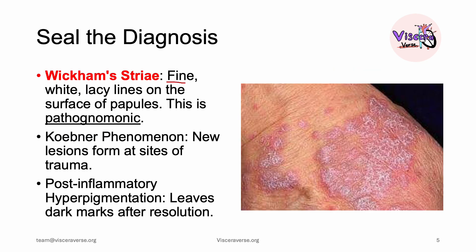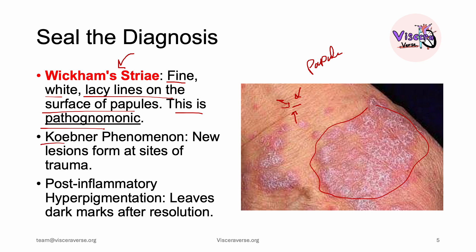Wickham striae are fine white lacy lines on the surface of papules or plaques, and are pathognomonic — so whenever we see them, the diagnosis is essentially made. We also have something called Koebner phenomenon: whenever you have any sort of minor trauma, such as a cut, a new papule or plaque will form. Koebner phenomenon is not only found in lichen planus; it can also be found in many other diseases including vitiligo and sometimes atopic dermatitis.